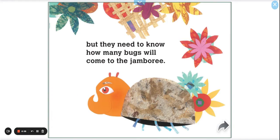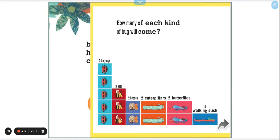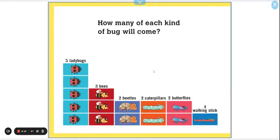The ants keep working, but they need to know how many bugs will come to the jamboree. So here's another kind of graph we like to see. We've seen these before. So how many of each kind of bug will come? So I'm going to ask you guys, how many beetles are going to come? Two. Good job. How many walking sticks are going to come? Just one. What about caterpillars? And butterflies. All three of these friends have two friends coming. And we have three bees coming to the jamboree and five ladybugs. So friends, what is the least amount of friends coming? The walking stick. What is the most amount of friends coming? The ladybugs. Good. And we have three friends who have the same amount of votes who's coming.